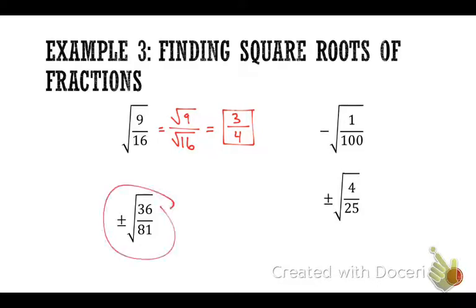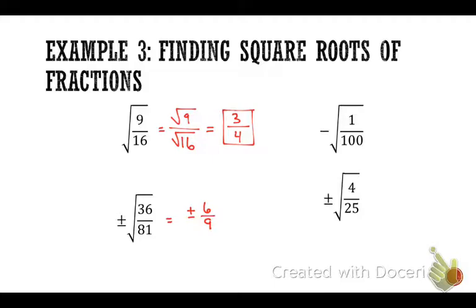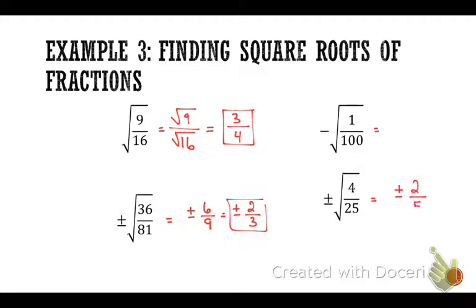Try the other three. For the bottom left: the square root of the numerator and denominator gives 6 over 9, and can you reduce that? Positive-negative 2 thirds. For the bottom right: positive-negative 2 over 5 — can't be reduced, that's it. For the top right: negative 1 over 10, because we're just taking the square root of the numerator and denominator. You guys good with that?